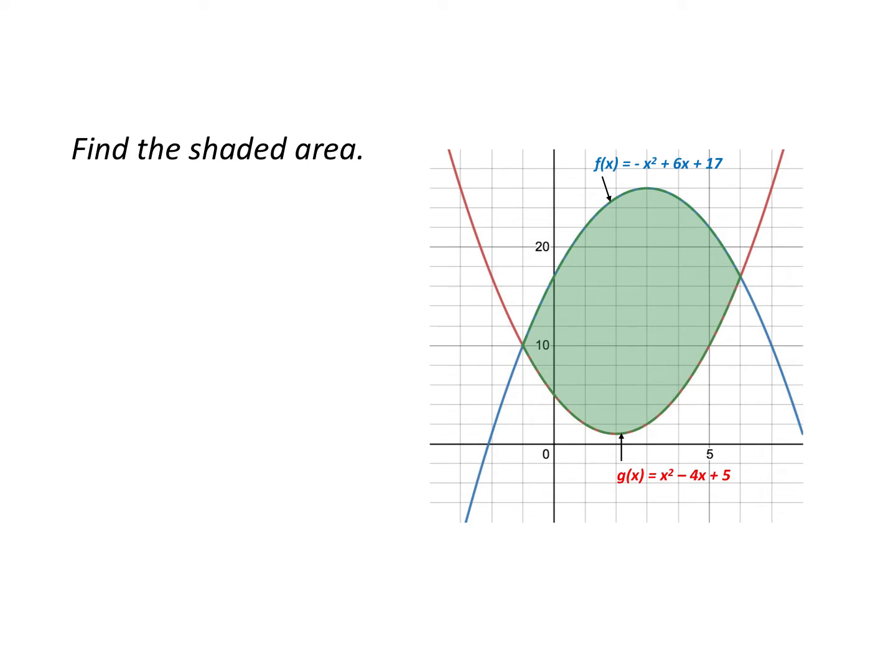Of the shaded region. Well, the first thing we want to do is find the points of intersection. We want to find this point here and this point here. In order to do that, all we do is simply set the two functions equal to each other.